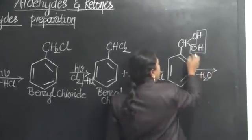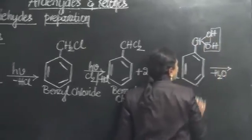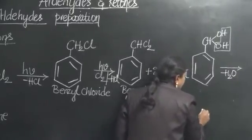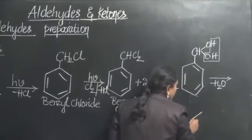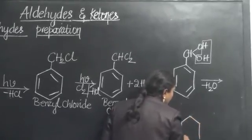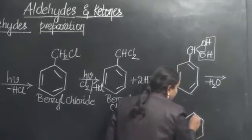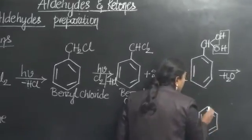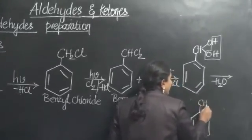And what is that we are left with? CHO. Since I don't have space there, I am writing it below. We land in the formation of benzaldehyde. And as you know, this is the structure of benzaldehyde.